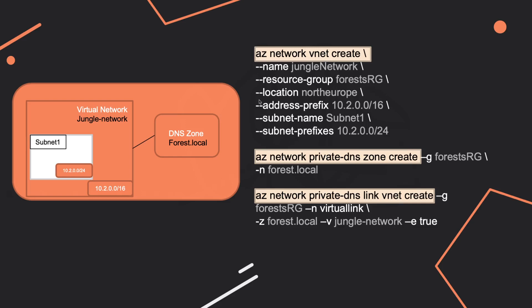What's also important to remember is the order of operations. First, we create the virtual network, then we create the DNS zone. And in the end, once these two resources are deployed, we create a private DNS link VNet. This is all you have to remember for this part. Don't bother remembering parameters or mandatory parameters for this exam — they don't test you on those details.